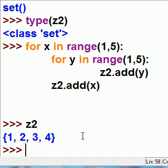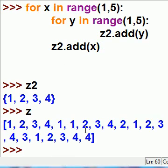With the list Z, we've got plenty of duplicates. But not with Z2. So if you want to use a data structure that automatically filters out all dupes, use a set.